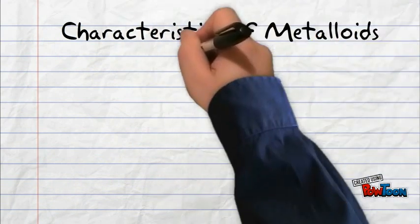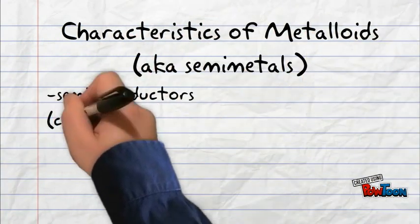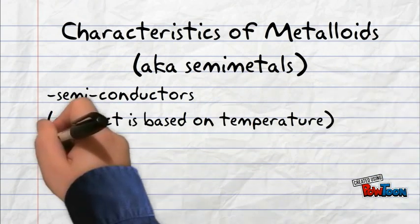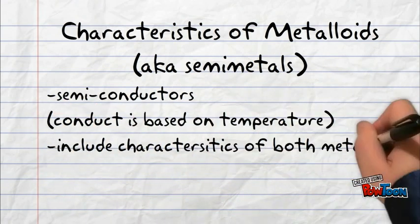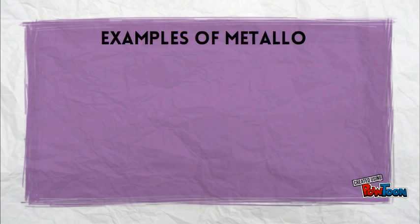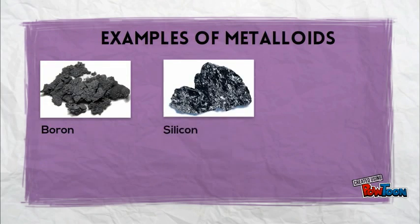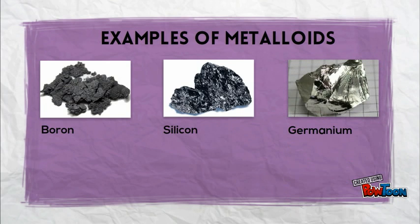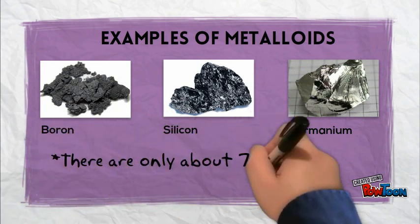Characteristics of metalloids, also known as semi-metals, are that they are semiconductors, and they have characteristics of both nonmetals and metals. Examples of metalloids include boron, silicon, and germanium. There are only about 7 metalloids in the periodic table.